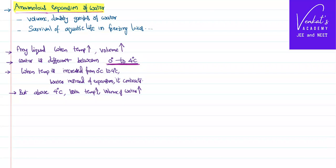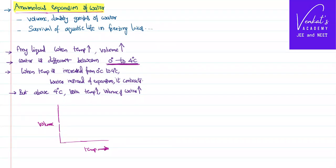If you draw a graph for that property, taking temperature on the x-axis and volume on the y-axis, with rise in temperature the volume decreases and it becomes minimum at 4 degrees centigrade. Further beyond 4 degrees centigrade, when you raise the temperature, its volume increases.